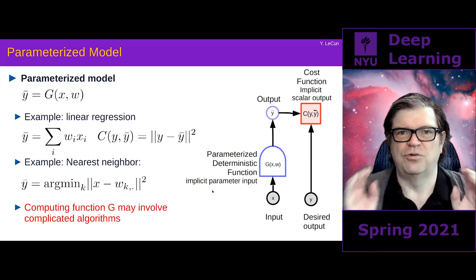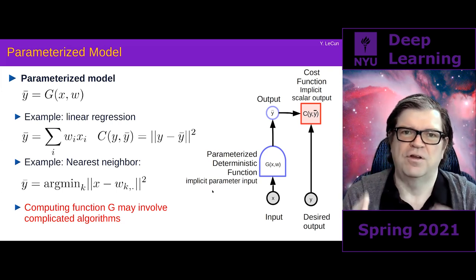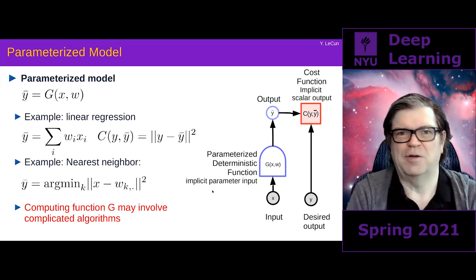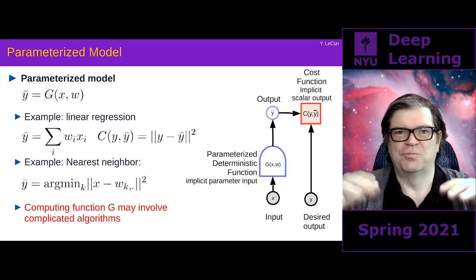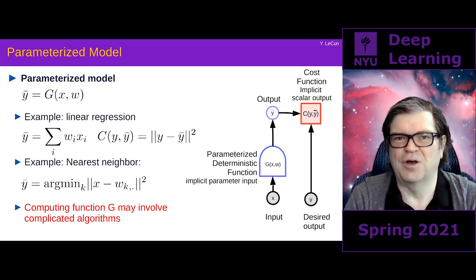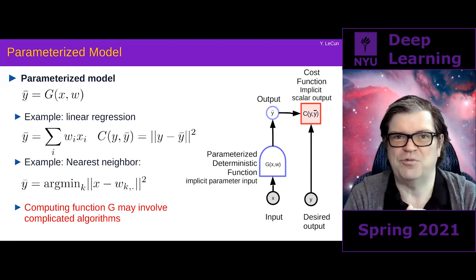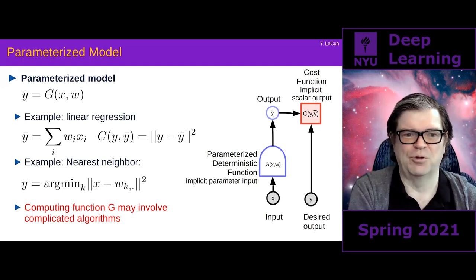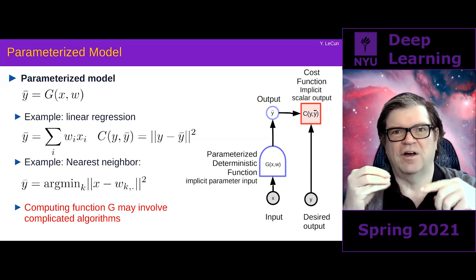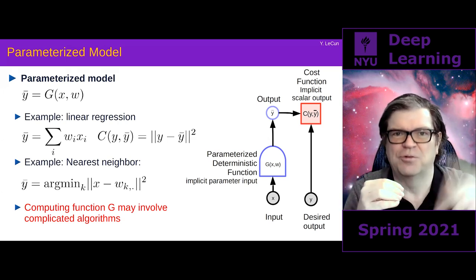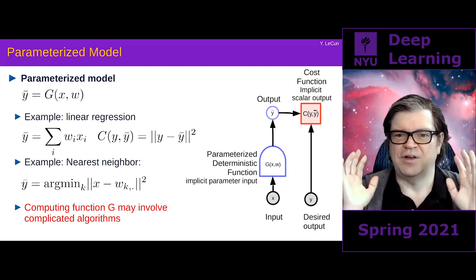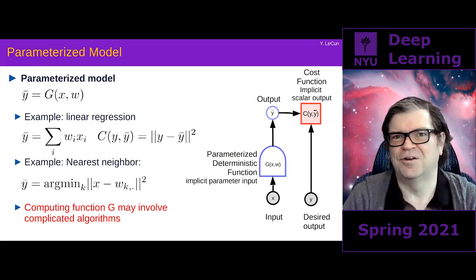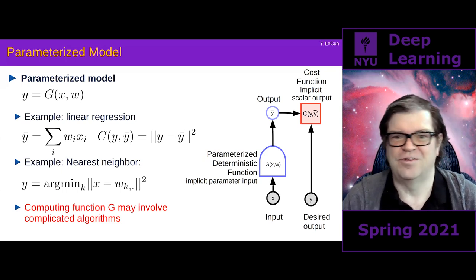Learning will consist in finding the set of w's that minimize this cost function averaged over a training set. The g function may not be something simple to compute — it may not be just multiplying a vector by a matrix. It could involve something complicated, like minimizing a function with respect to some other variable, or iterating some algorithm that converges towards a fixed point. So let's not restrict ourselves to simple g of x, w — it could be very complicated.